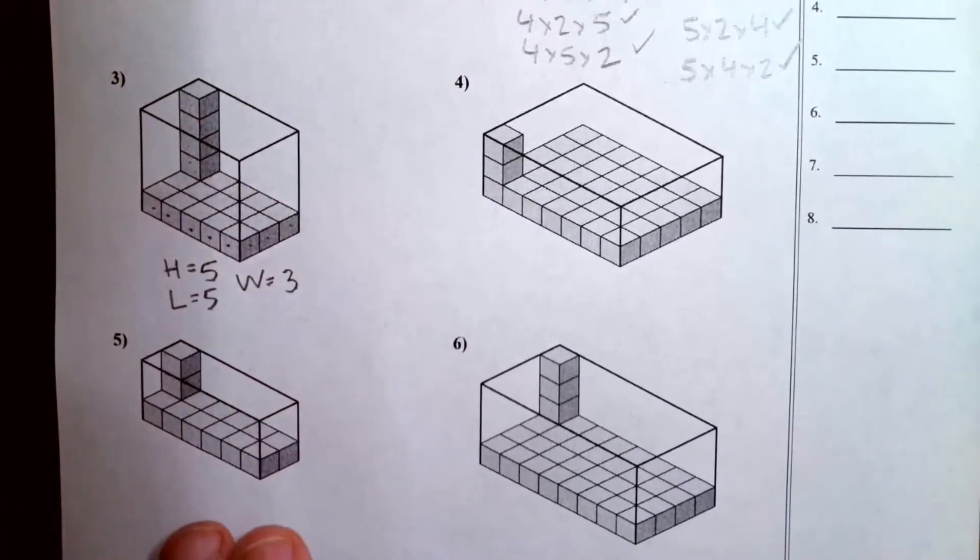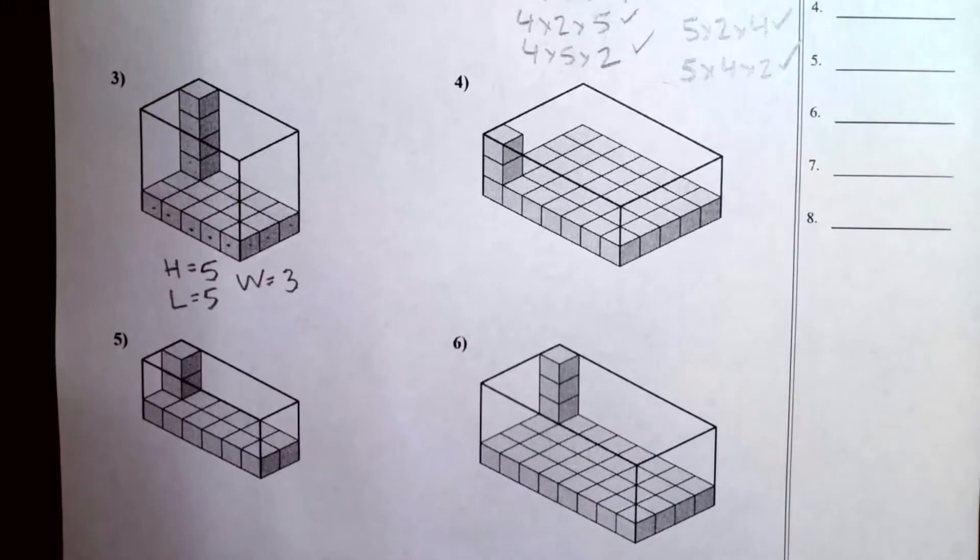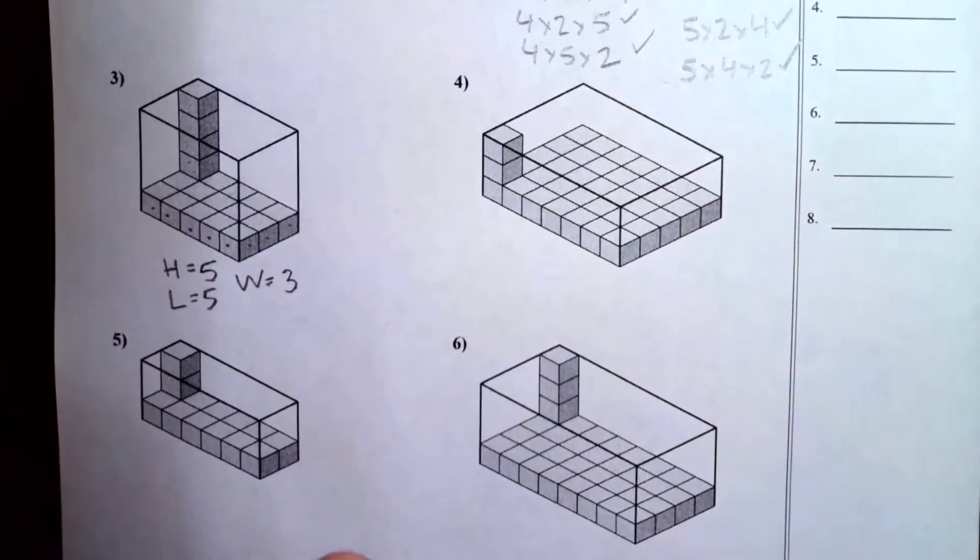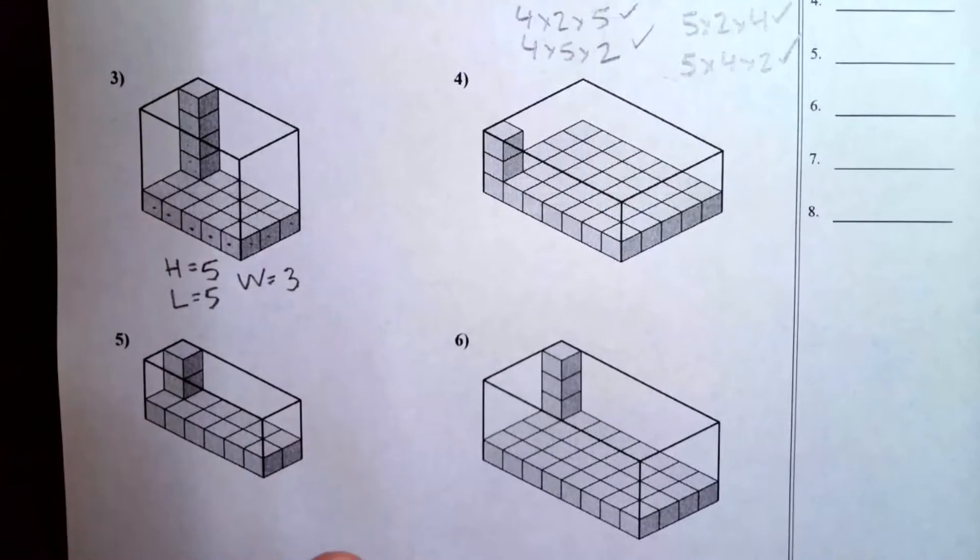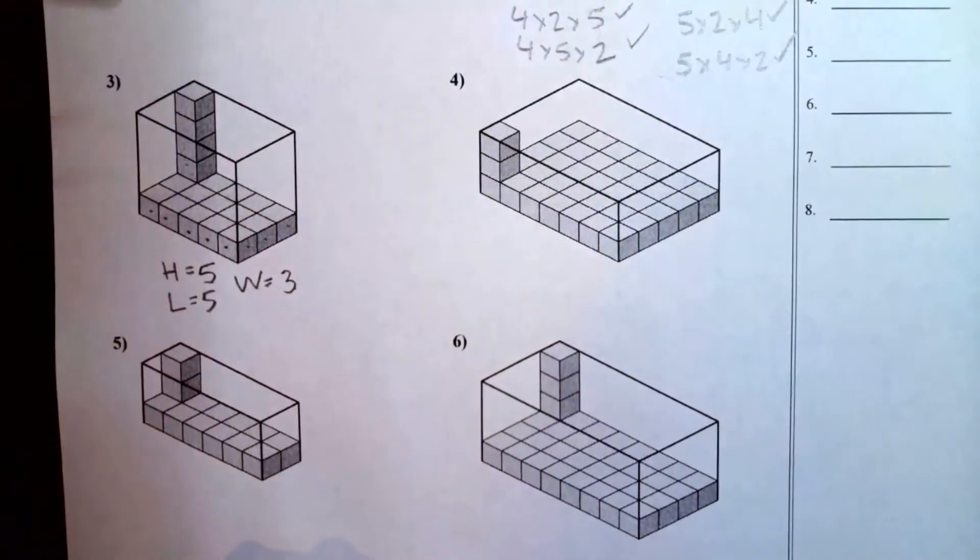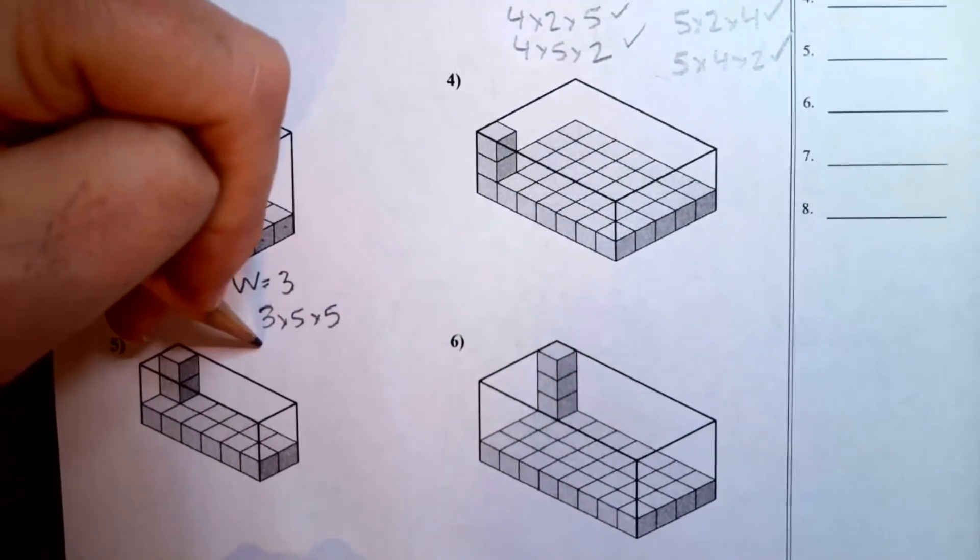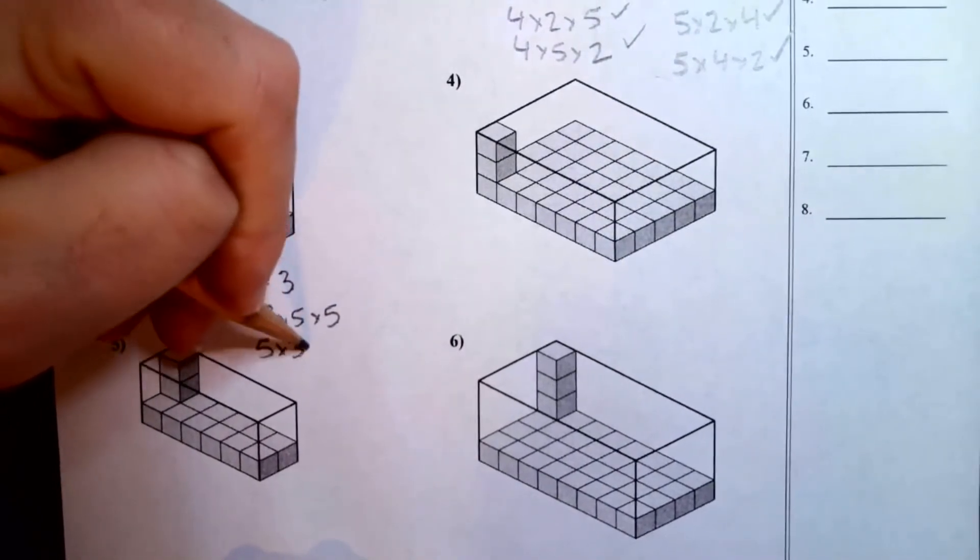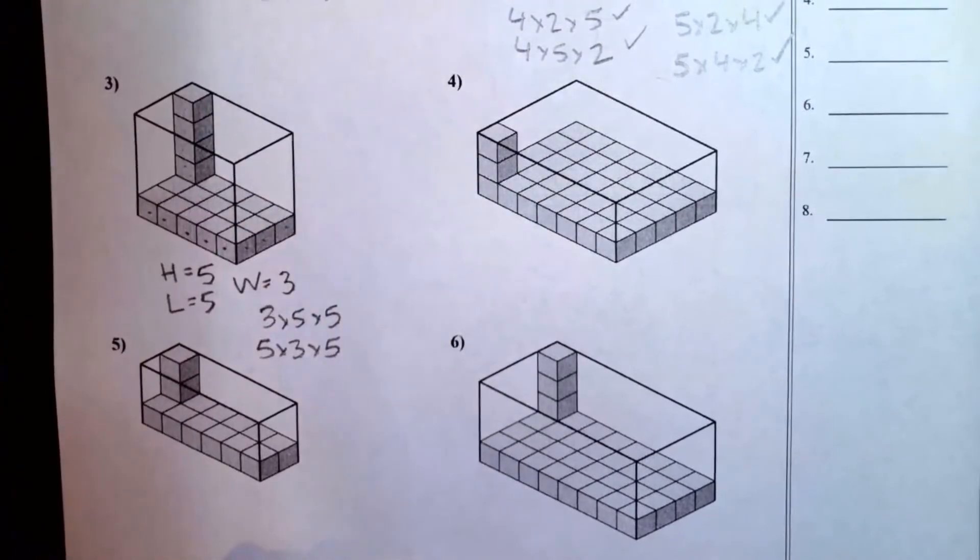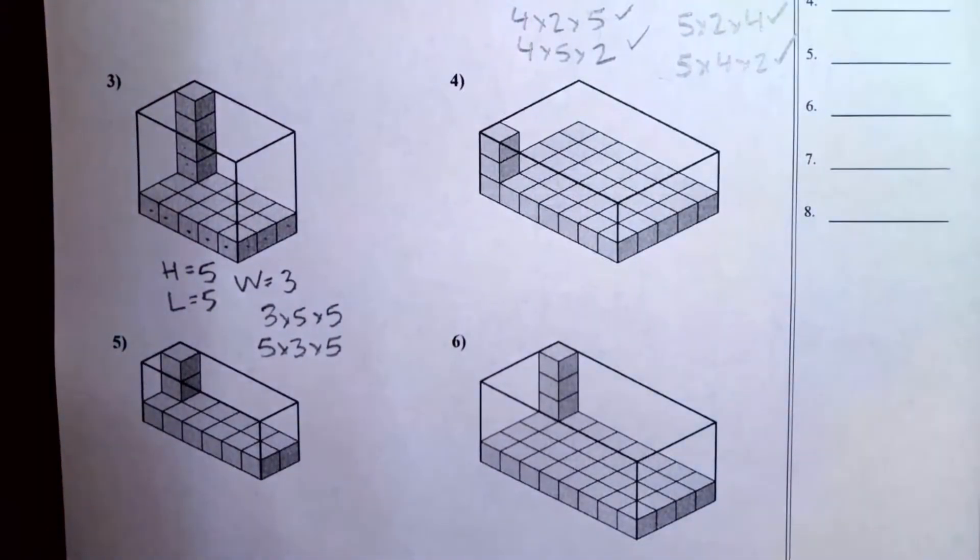So go ahead and tell me a possible expression for the volume of this prism. And there are a bunch of different combinations. So, I'll show, I'll do maybe one or two. So one would be three times five times five. You might have done five times three times five, or maybe you did something else with those numbers. Either way, as long as you've got those three numbers all being multiplied. You did it right.